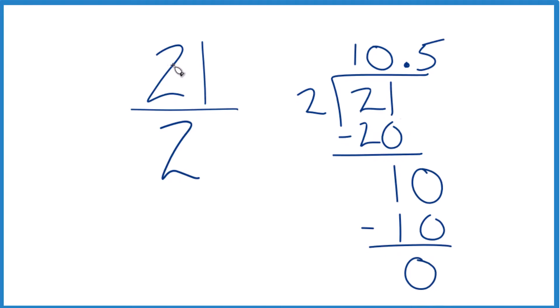So in answer to the question, 21 over 2, the fraction, that equals the decimal 10.5. And that's kind of what we thought it would be, right around 10. These two numbers are equivalent. They have the same value, just written in different formats.